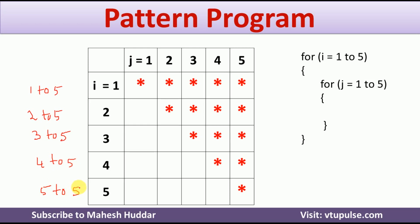Now, if we try to understand the logic here: if the value of i is equal to 1, the j value will go from 1 to 5 to print star; if the value of i is equal to 2, the value of j will go from 2 to 5. So what we can do is write a condition: if the value of j is greater than or equal to i, we will print star. For example, in the first iteration when i is equal to 1 and j becomes 1, 1 is greater than or equal to 1 — yes, star will be printed.